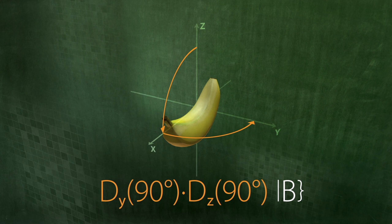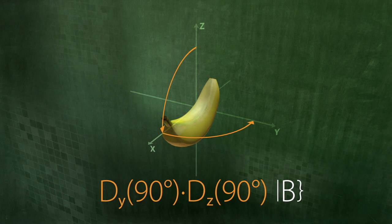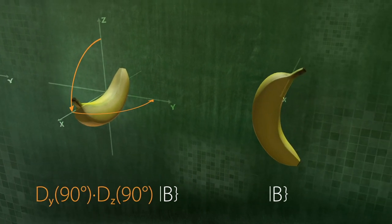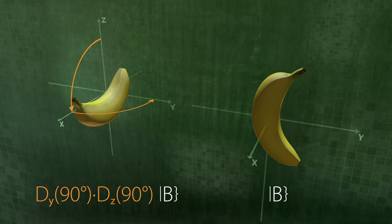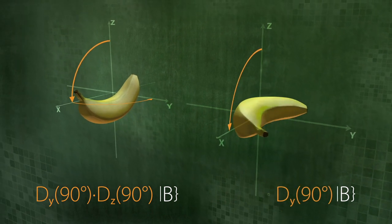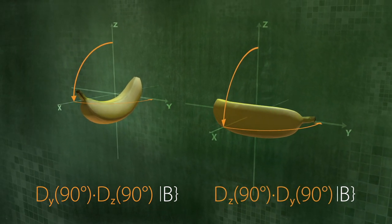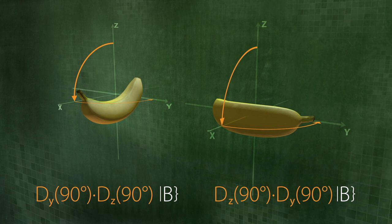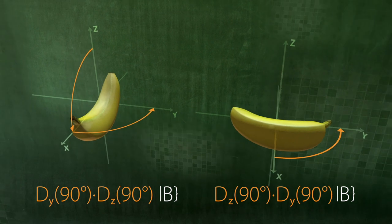Rotation operators have a curious feature. To demonstrate this, let us perform the same rotation operations in reverse order. We first rotate the banana about its y-axis and then about its z-axis. The final state of the banana is different, although the initial state was the same as before. The banana is not lying on its back now. It has been turned to the side.